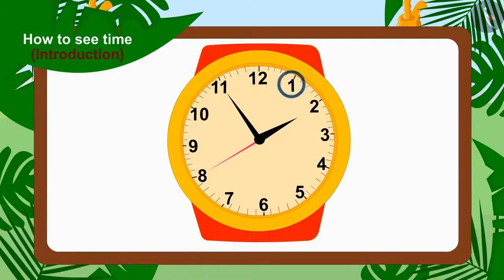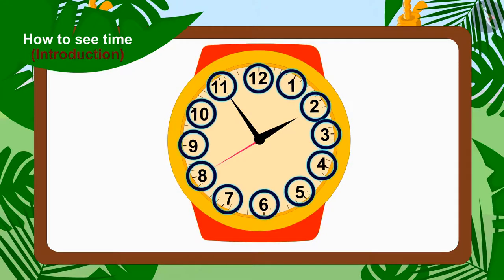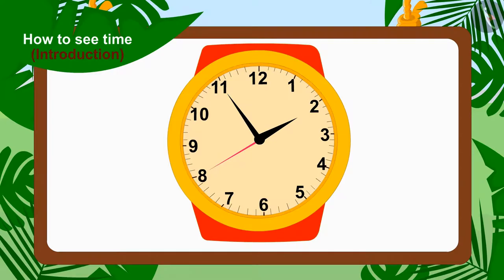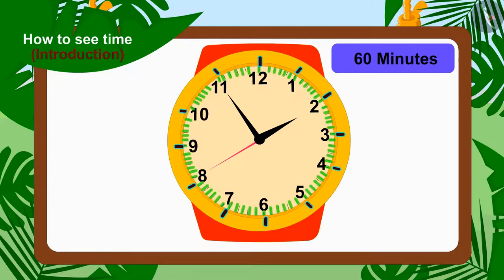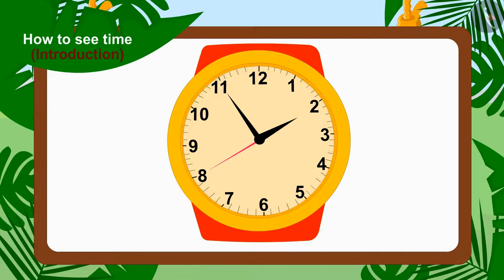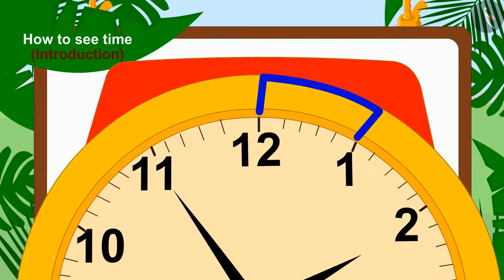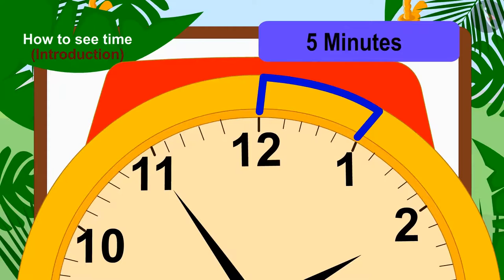In a watch, there are numbers from 1 to 12 written in this manner. The entire watch consists of 60 minutes and they are divided between 12 numbers. So each part is of 5 minutes.